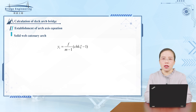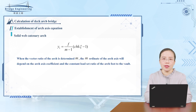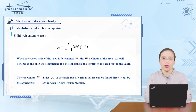It can be seen from the arch-axis equation that when the rise-to-span ratio of the arch is determined, the longitudinal coordinate of each point of the arch-axis will depend on the arch-axis coefficient M. M depends on the ratio of dead-load concentration between arch-foot and arch-crown. The arch-axis coordinate Y values for various M values can be directly found in the appendix of the design manual for highway bridges and arch bridges.